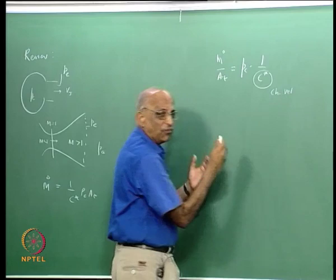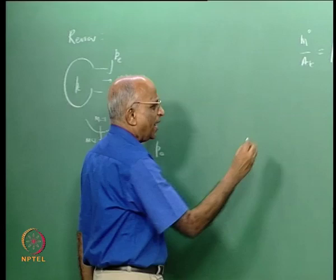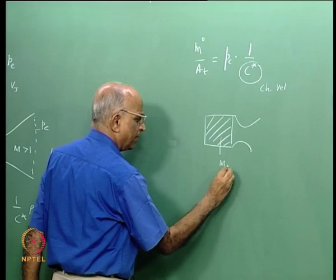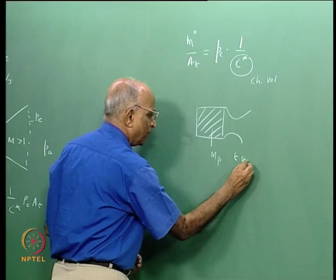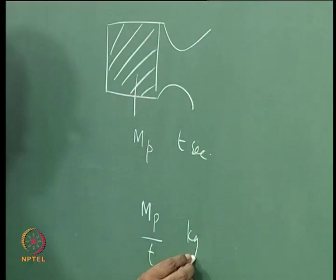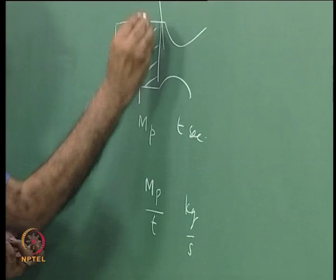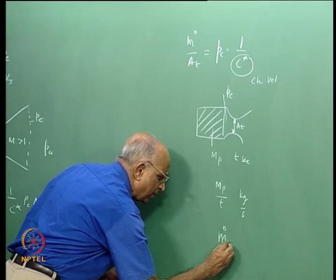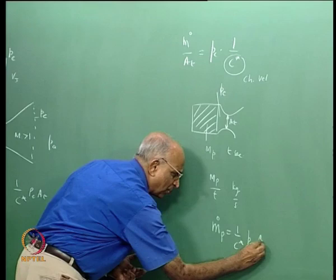Let's take one example to clarify. Suppose I have a rocket and I put propellant in it — mass of propellant mp. Let the rocket fire steadily for a period of t seconds. Then the mass flow rate through the nozzle is mp divided by t (kg/s). If the pressure built in the chamber is Pc and I have a throat area At, then mp/t = ṁ = (1/C*) × Pc × At. From this I can determine the value of C-star.